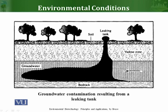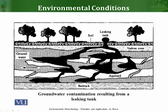However, the subsurface areas are not so simple. As you can see in this diagram, it is very complex. There is a tank which has been leaked and the chemical compound present in that tank has found its way through the vadose zone to the ground water ultimately.